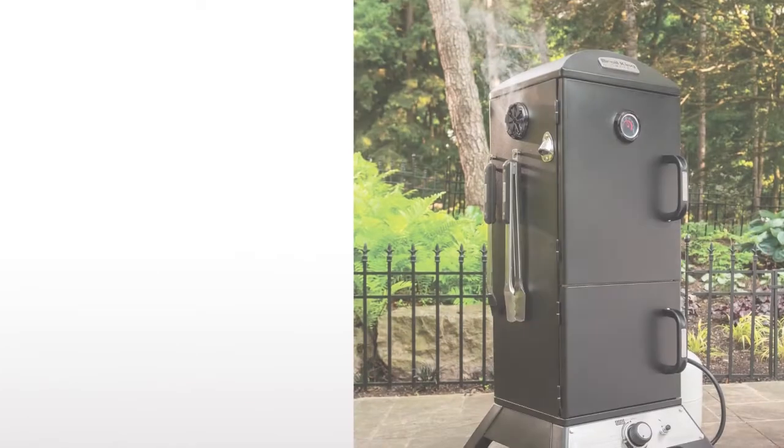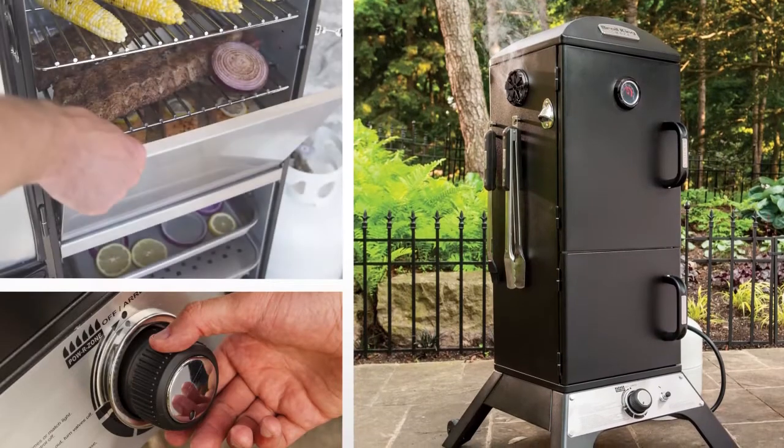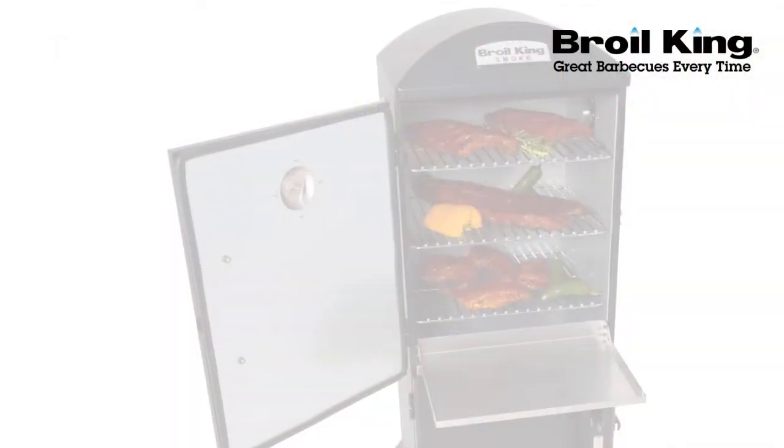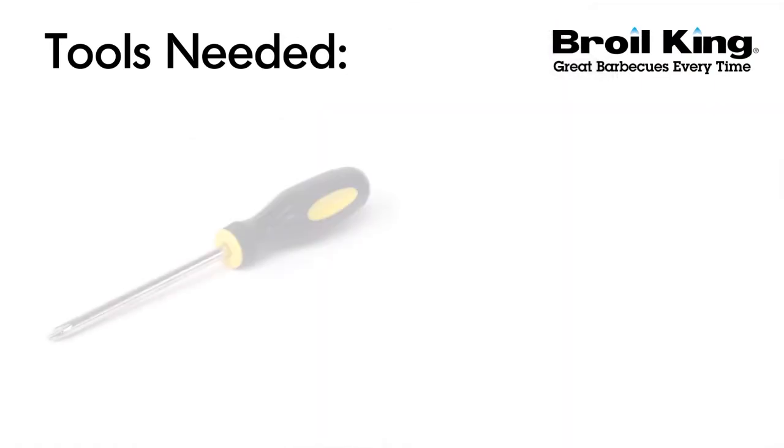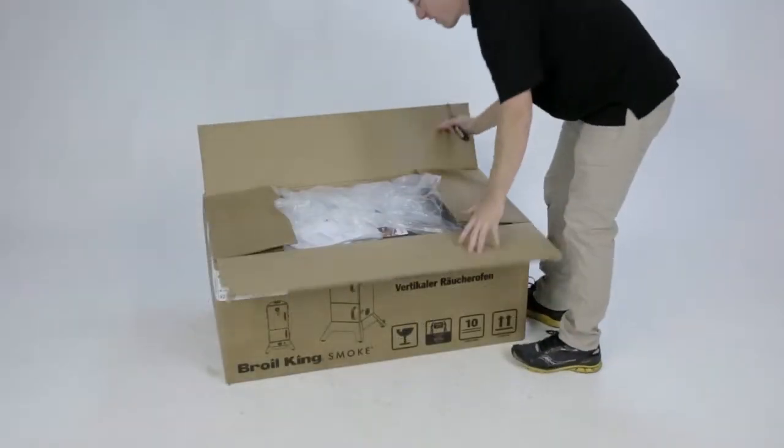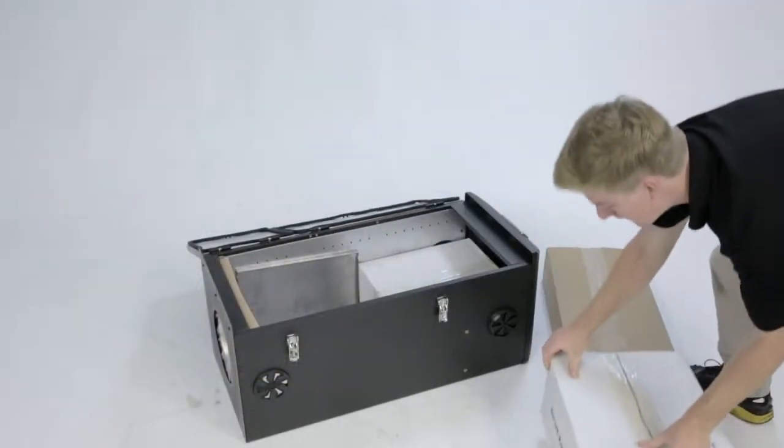Welcome to the assembly video for your Broilking Smoke Propane Cabinet Smoker. This video will serve as a companion to your assembly manual. You will need the following tools. Open the carton and carefully lay all the components on the ground.